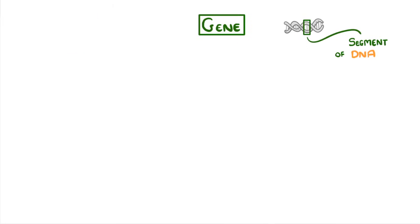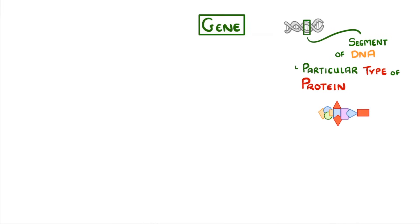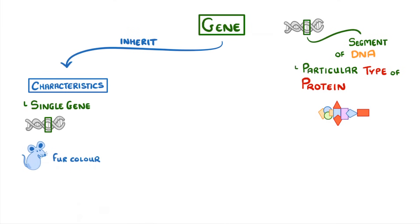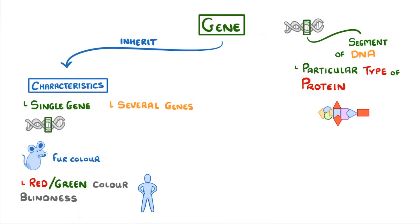All of these terms are related to genes, and remember a gene is just a segment of DNA that codes for a particular type of protein. Together, these genes we inherit determine the characteristics that we go on to develop. Sometimes these traits are determined by a single gene, like the ones that code for fur color in mice and red-green colorblindness in humans. More often, though, our characteristics are determined by several different genes that interact with each other. For example, there are loads of genes that code for height, which is one of the reasons why we're all different sizes.